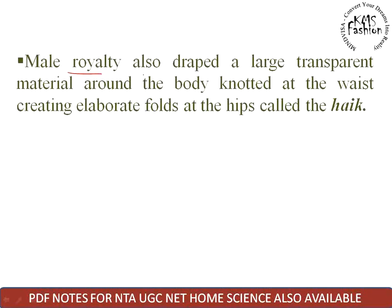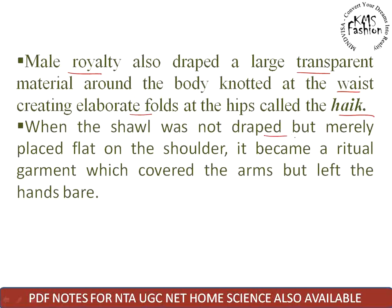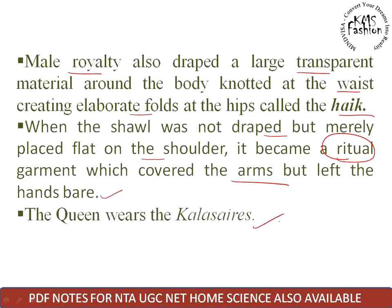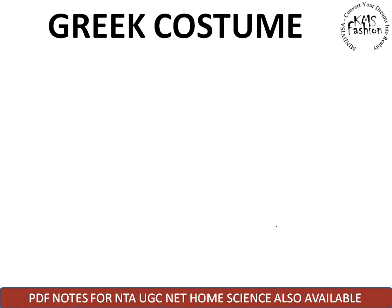Male royalty also draped a large transparent material around the body, knotted at the waist, creating elaborate forms at the hip — called Hake. When the shawl was not draped but merely placed flat on the shoulder, it was a ritual garment used to cover the arms but leaving the hands bare — just placed as-is on the shoulder without tying. The queen wore the Kala sarees. So this covers Egyptian costumes.